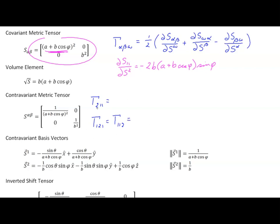In the first case where alpha is 2, the derived value is the third term and the other two are zero. We have a negative and a negative, so this value equals positive b times (a plus b cosine phi) times sine phi. In the other cases where alpha is 1, we have this term times a half, giving negative b times (a plus b cosine phi) times sine phi.